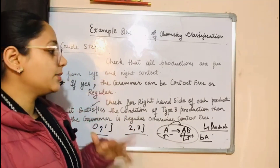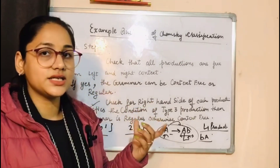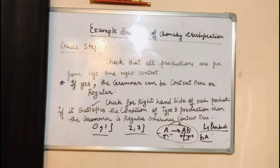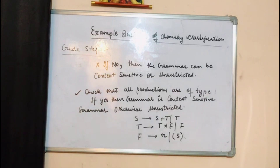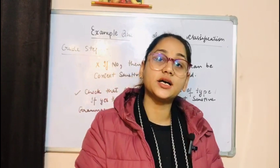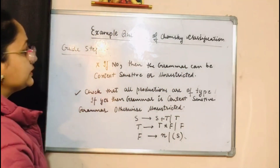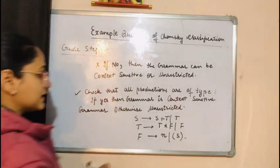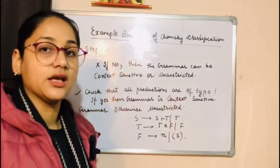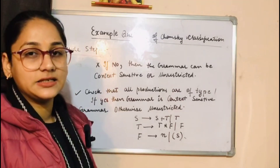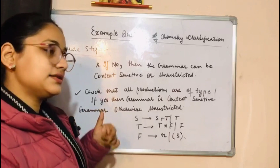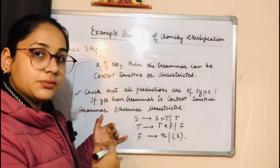If the productions are not free from context — that is, phi and psi exist — then the grammar can be context-sensitive or unrestricted. We then check whether all productions are of Type 1. The Type 1 rule states that alpha is not equal to epsilon, and the length of the left-hand side is less than or equal to the length of the right-hand side. If this condition is satisfied, then the grammar is context-sensitive; otherwise, the grammar is unrestricted.